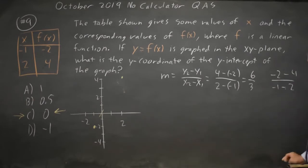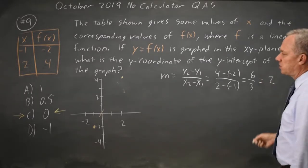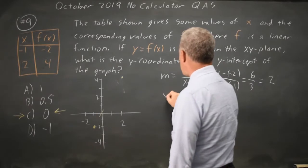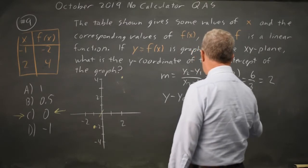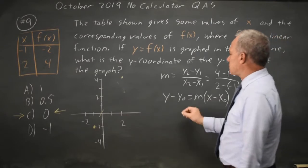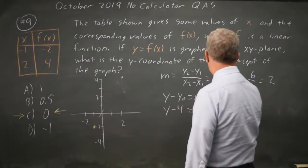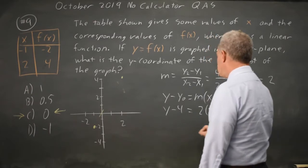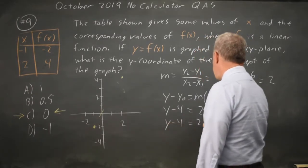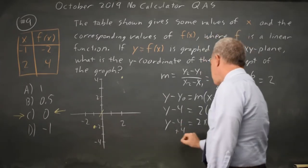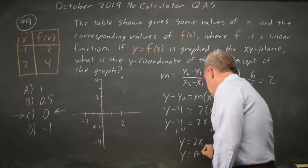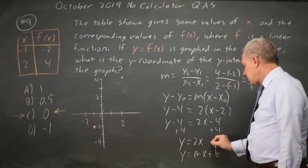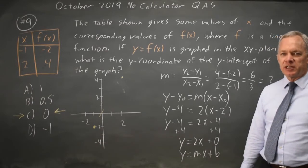You could also get negative 6 over negative 3 by swapping the order — so swapping will not give you the wrong answer. Don't worry about which one comes first. And 6 over 3 gives a slope of 2. Using point-slope form: y minus your y coordinate equals your slope times x minus your x coordinate. So this is y minus 4 equals 2 times (x minus 2). Distributing: y minus 4 equals 2x minus 4. Add 4 to both sides and you get y equals 2x, so b is 0. The y-intercept is 0 — again, choice C.